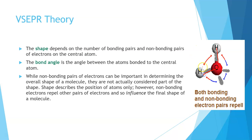We can see a bond angle between H-C-H, for example. Non-bonding pairs are important in determining the shape of the molecule. We don't count them when defining bond angles, but we must remember to account for the shape they give.